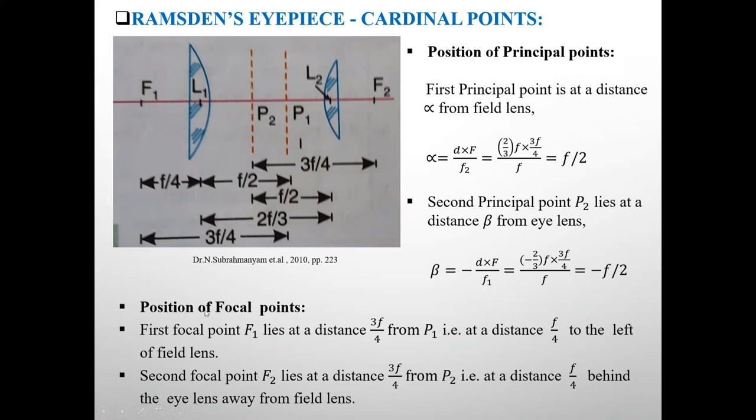Now we will see position of focal points F1 and F2. First focal point F1 lies at a distance 3F by 4 from this principal point P1, see this distance. That is at a distance of F by 4 to the left of field lens, this distance.